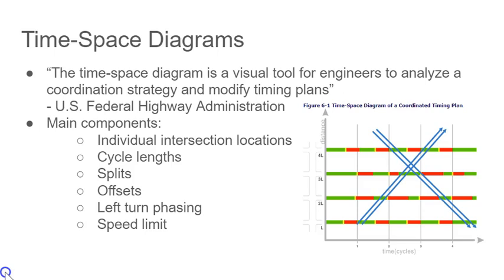Obviously, with more vehicles and arterial roads put into the equation, time-space graphs get much more complex and peak optimization of the road is difficult to reach. The cycle lengths need to best fit the flow of traffic and make sure every vehicle has their chance to go with little impedance of their trip as possible.